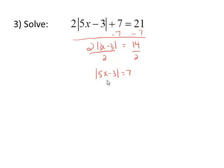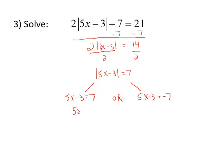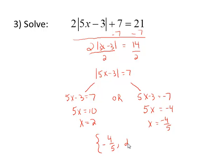In order for a number to have an absolute value of 7, that number must be 7 or negative 7. So we'll break this into two equations: 5x minus 3 equals 7, and the second equation will be 5x minus 3 equals negative 7. To solve both of these equations, add 3 to both sides and divide by 5. Adding 3 gives us 5x equals 10, and dividing by 5, x equals 2. If we add 3 to both sides of the second equation, negative 7 plus 3 is negative 4. Divide by 5 and we get x equals negative 4 fifths. So our solution set is negative 4 fifths and 2.